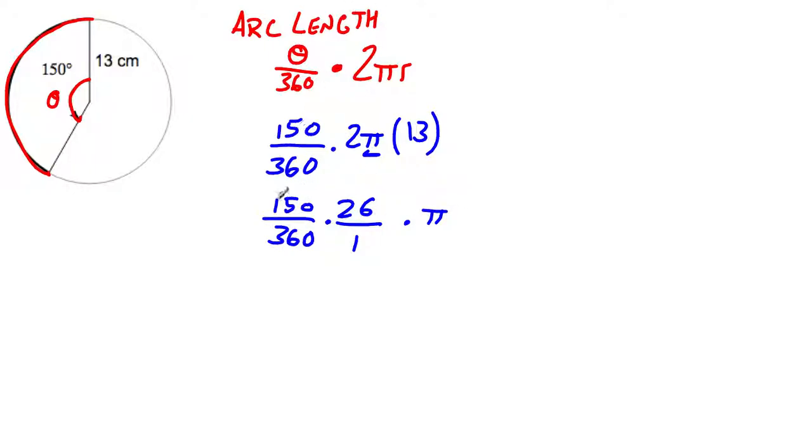So we start reducing these fractions. So I see that I have 150 over 360. I can divide these both by 10 and get 15 over 36. 15 and 36 both have a common factor of 3. So 15 divided by 3 is 5. And 36 divided by 3 is 12.